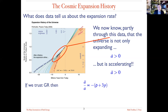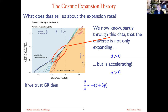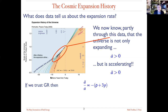Where does the notion of dark energy come from? Our model for explaining the universe is general relativity, and if we trust general relativity there's an equation that arises. On this plot, the horizontal axis is physical time — billions of years from today, so today is at zero, and this is ten or twenty billion years in the past.